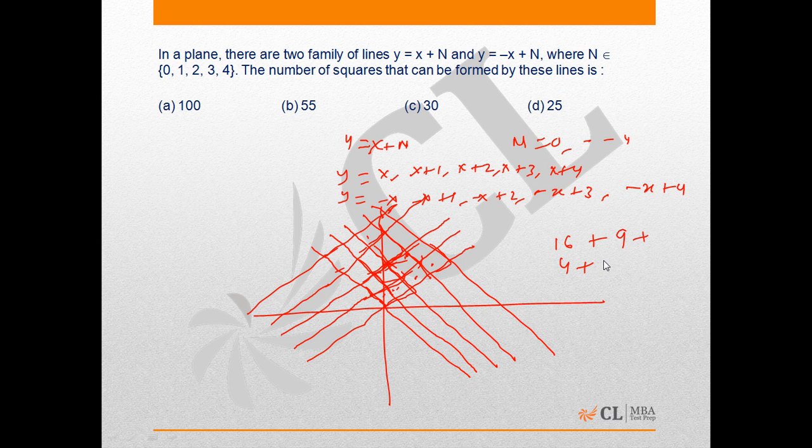Therefore, the required number is 16 plus 9 plus 4 plus 1, which is equal to 30. Therefore, option C is the correct answer.